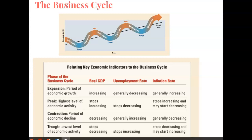The trough is when we hit our very lowest level of economic activity. And once again, economists do not know when a trough has occurred until after the economy starts expanding again. We'll see the real GDP stop decreasing, the unemployment rate stops increasing, and the inflation rate stops decreasing and may start increasing. This cycle will continue to repeat itself over years or months, but it is inevitable.